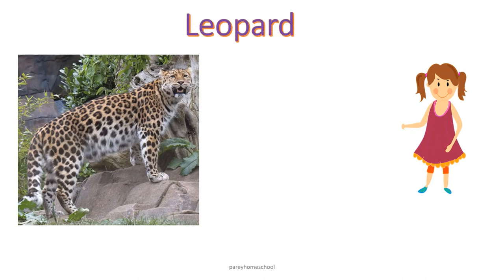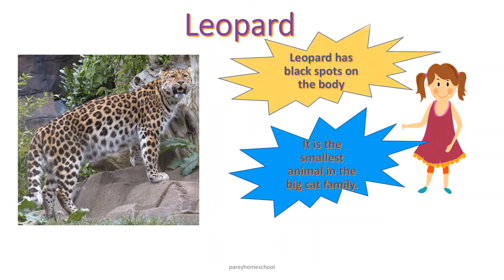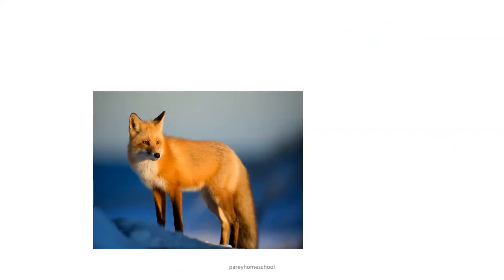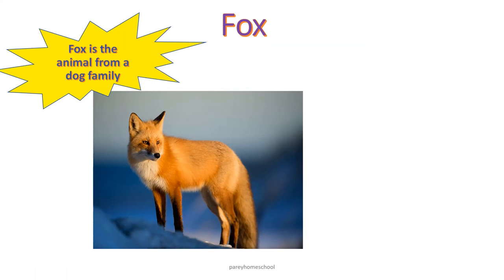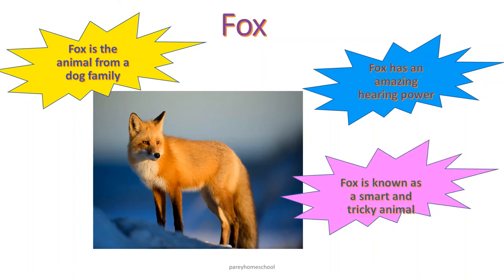This is leopard. Leopard is the smallest animal in the big cat family. Leopard has black spots on the body. Leopard finds their prey mostly at night. This is fox. Fox is the animal from the dog family. Fox has an amazing hearing power. Fox is known as a smart and tricky animal.